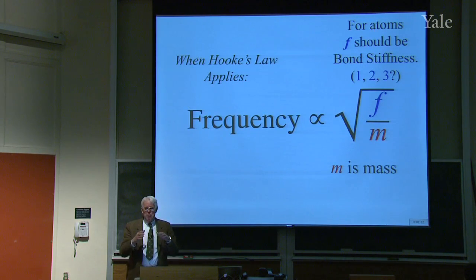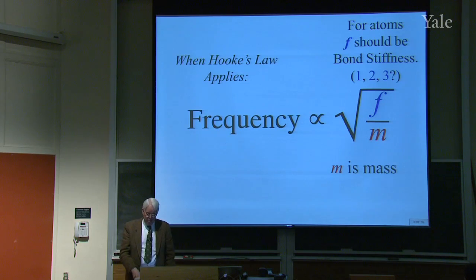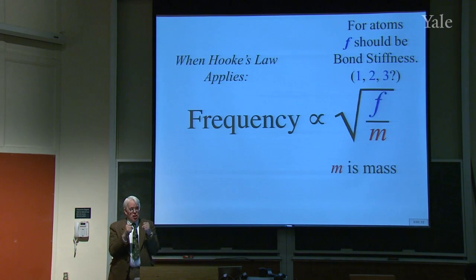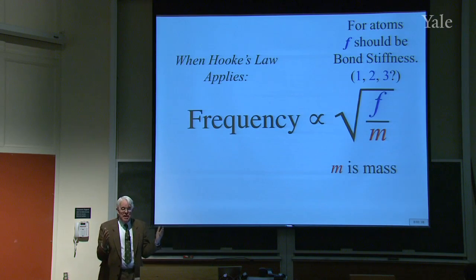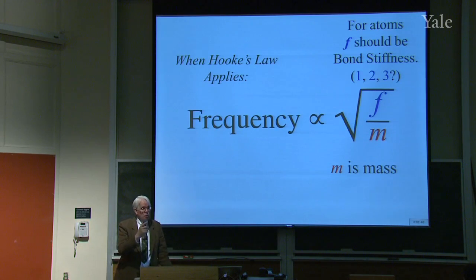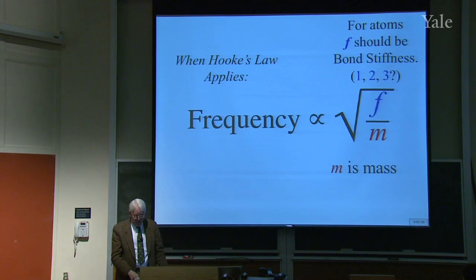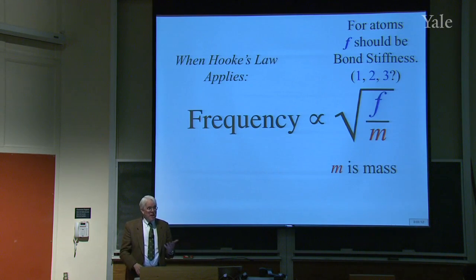For molecules vibrating, the force constant should reflect how stiff the bond is. A single bond should be easier to stretch than a double bond, and a double bond easier than a triple bond. But are they really proportional to 1, 2, 3? Is a double bond twice as stiff as a single bond for vibrational purposes? Is a triple bond three times as stiff? These are things we can check using infrared spectroscopy.